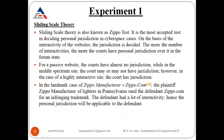The next theory is the sliding scale theory, also known as the Zippo test. It provides jurisdiction for interactive websites and is not applied to passive websites. An interactive website means a website with which users can interact. On the basis of the interactivity of a website, the jurisdiction is decided — the more interactivity, the more the court has personal jurisdiction over it in formal states.